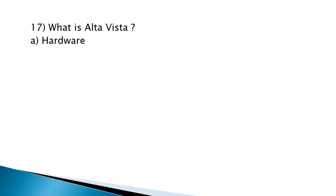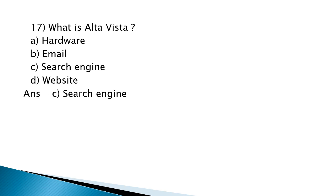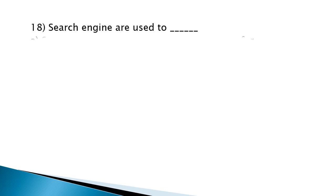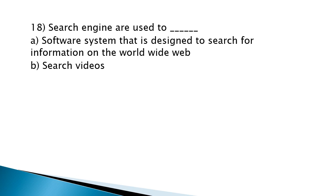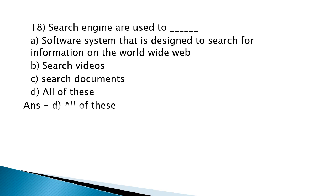What is AltaVista? AltaVista is a search engine. Search engines are used to search videos, search documents, and all of these. A search engine is a software system that is designed to search for information on the World Wide Web.